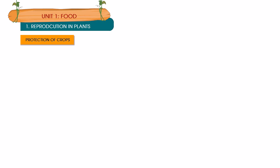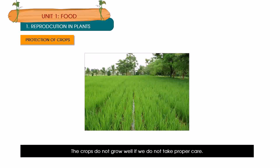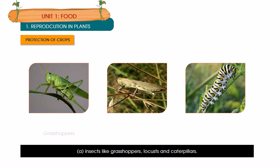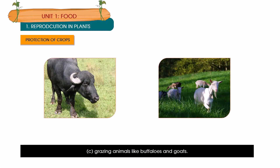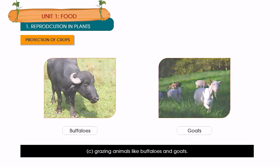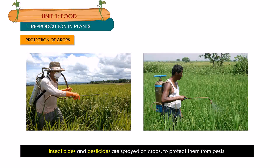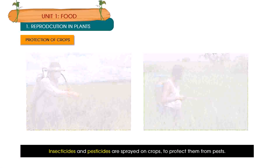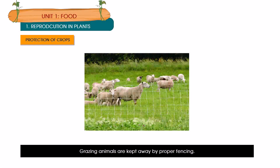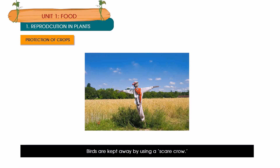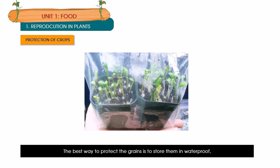Protection of crops: the crops do not grow well if we do not take proper care. We need to protect our crops against: A. insects like grasshoppers, locusts and caterpillars; B. diseases; C. grazing animals like buffaloes and goats. Insecticides and pesticides are sprayed on crops to protect them from pests. Fungicides are used to kill the microbes to prevent diseases in plants. Grazing animals are kept away by proper fencing. Birds are kept away by using a scarecrow. The best way to protect the grains is to store them in waterproof, insect-proof containers.